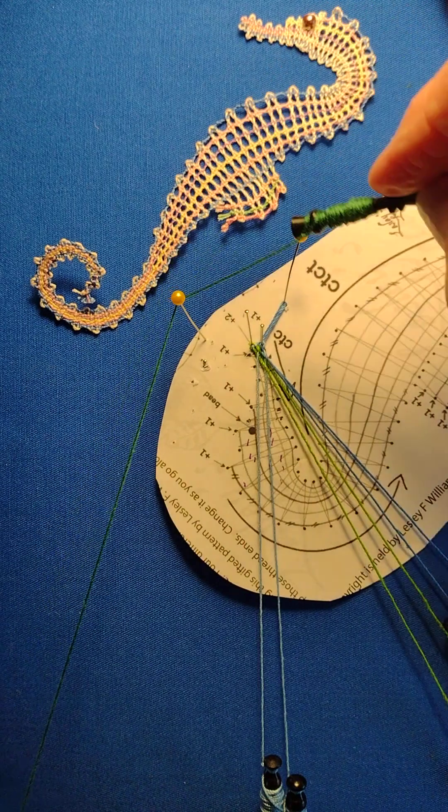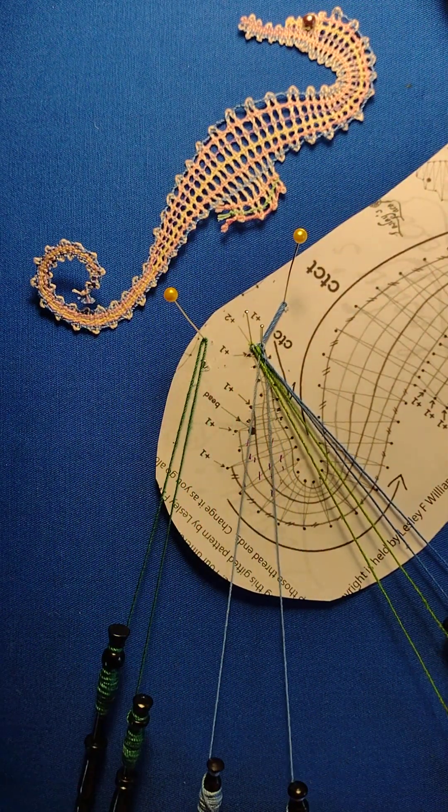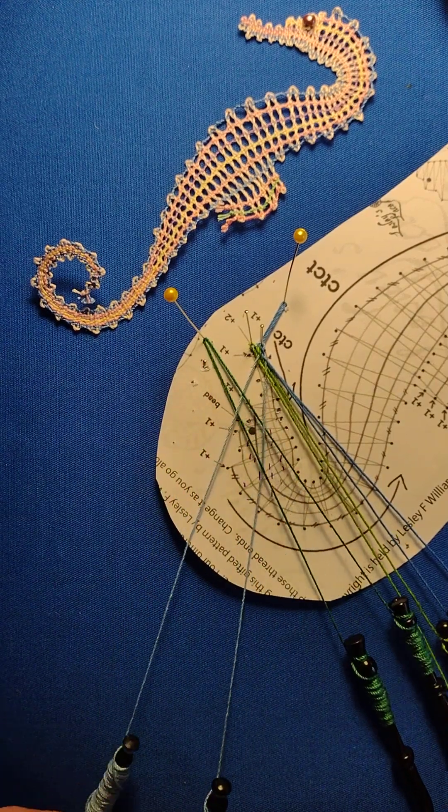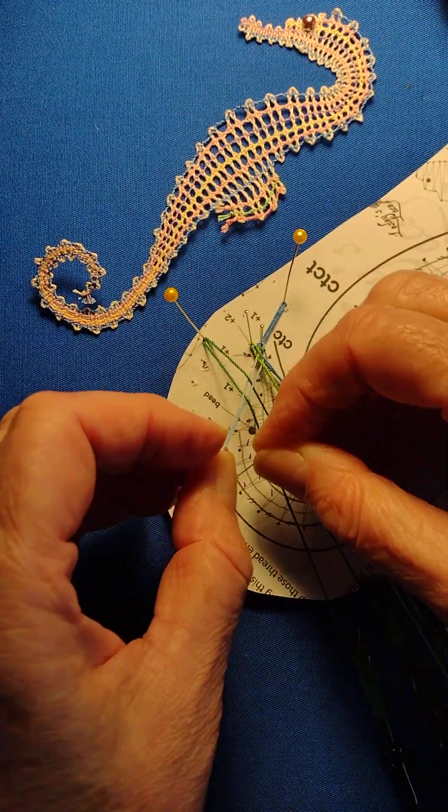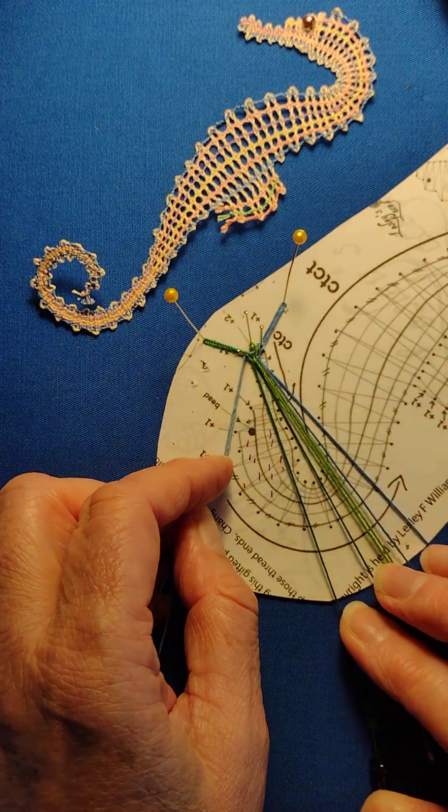Right, put another pair of passives on, just round the pin like that and now using my worker pair I'm going to do cross, twist, cross, two twists on the worker pair, twist, twist, pin in the hole that says plus one because that's the plus one that you've just put in.